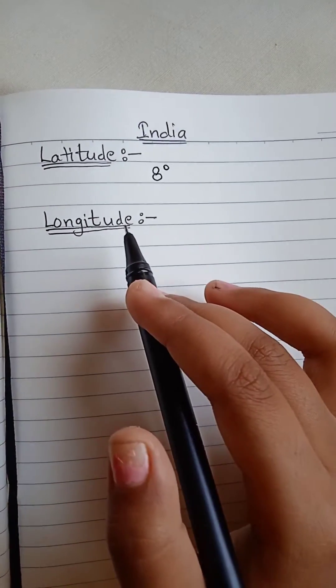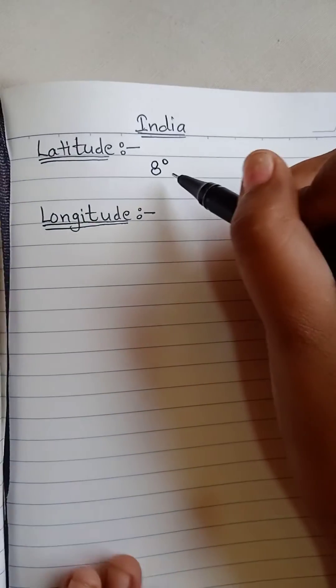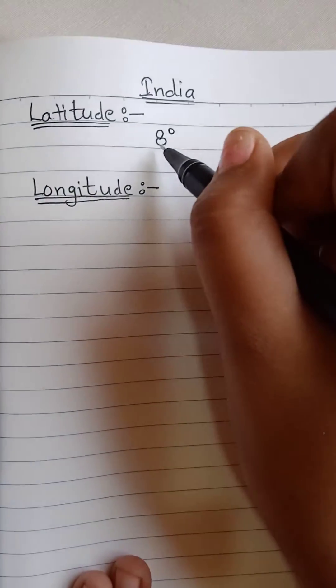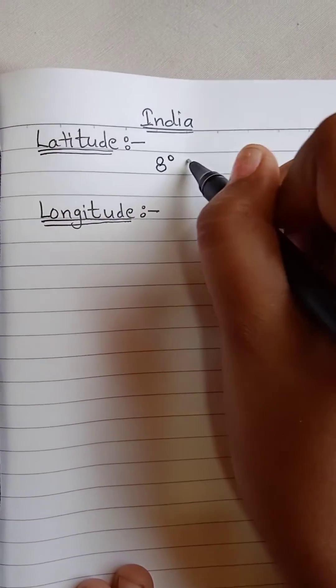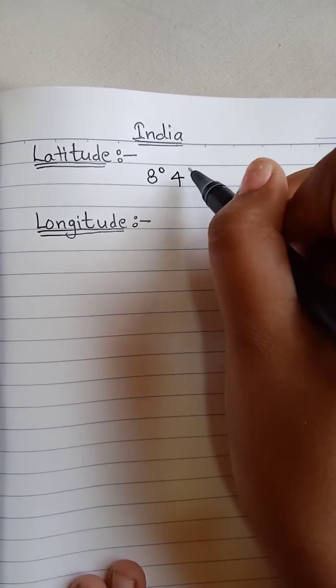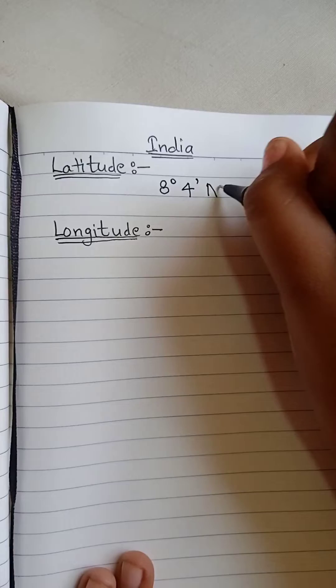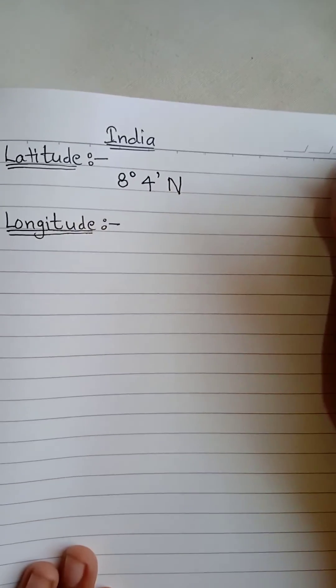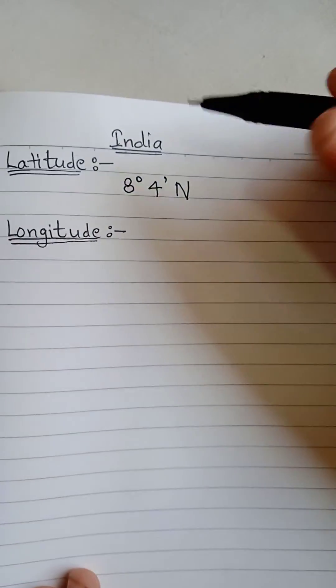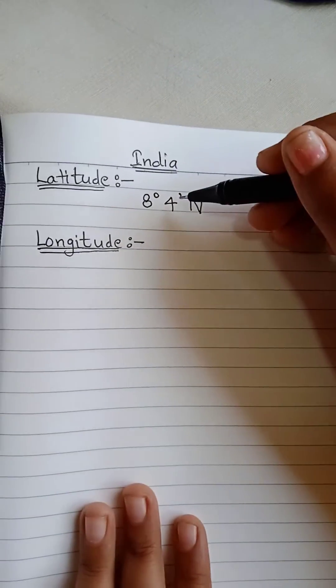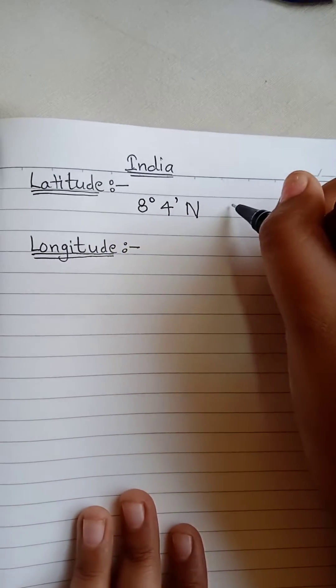So we have to make this 8 into half, so it is 4, of course. And this will be N, N means north. Then what you are going to do is subtract one from the 4 which is 3, subtract one from the 8 which is 7. 37 degrees.